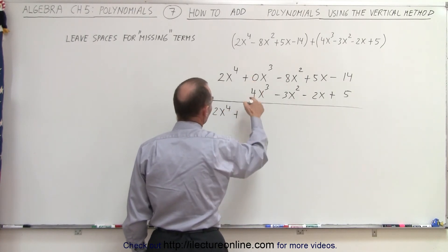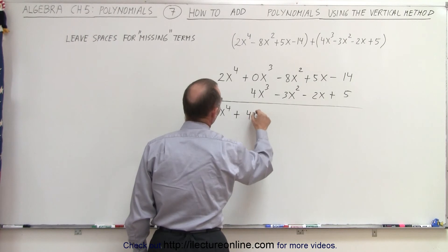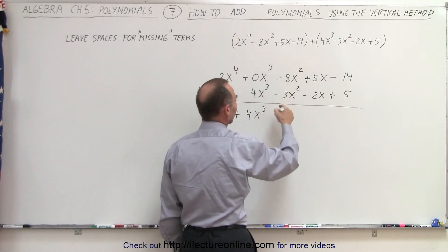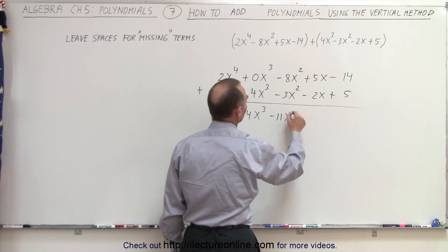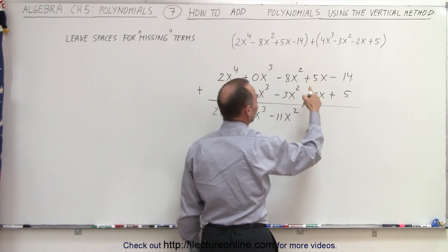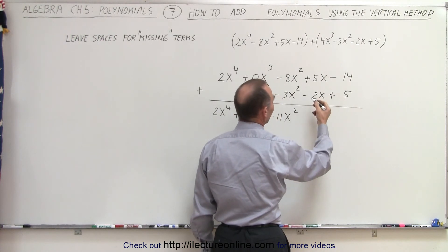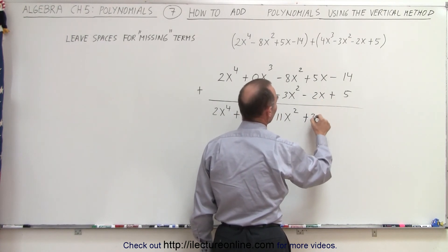Here we have plus 0 plus 4 gives us 4x cubed. We have minus 8, minus 3 added together is minus 11x squared. A plus 5 and a minus 2 gives us a plus 3x.